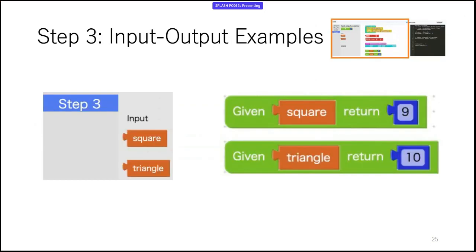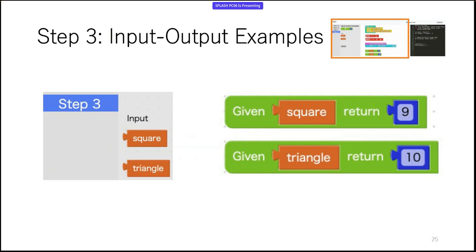That's step two. Let's move on to step three and create input-output samples. For the area function, we create two input-output pairs. Here the square and triangle blocks represent the data examples we composed earlier. These blocks show up automatically when we proceed to this step. The input-output examples are converted into Scala equations, and these equations are later used as the test of the function.